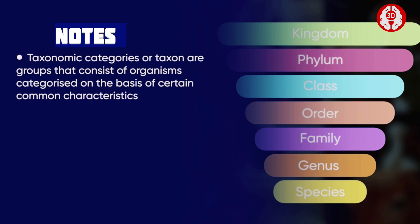The living organisms are categorized into different groups on the basis of certain common characteristics. These groups are referred to as taxonomic categories. Each taxonomic category is also known as a taxon.